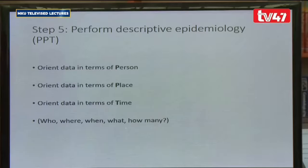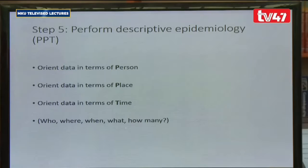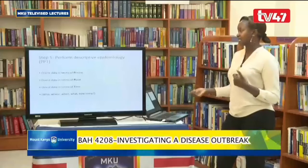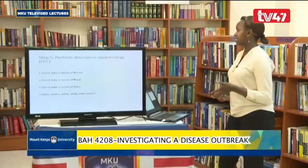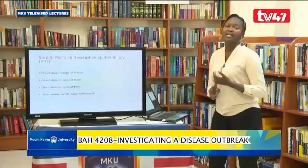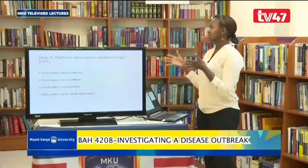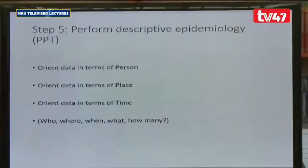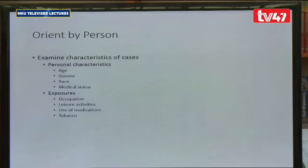Step number five is to perform descriptive epidemiology. In previous lectures we discussed descriptive epidemiology at length. This is where you describe who is affected, where it is occurring, when it started, what it is — viral, parasitic, foodborne — and how many have been affected. We summarize it as PPT: person, place, and time.